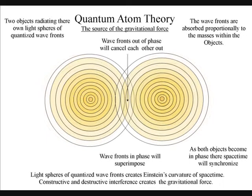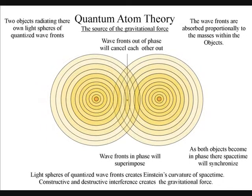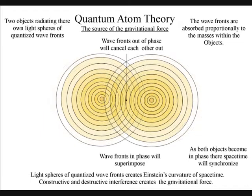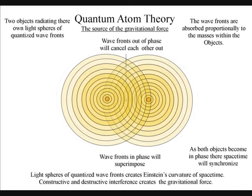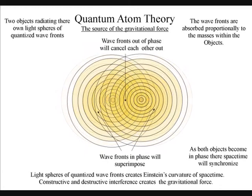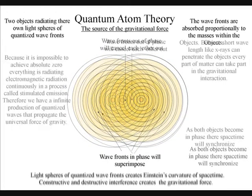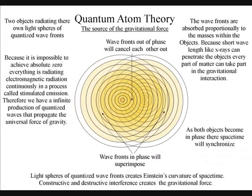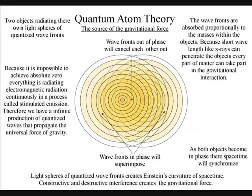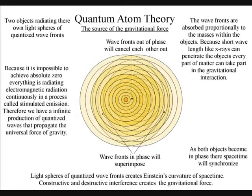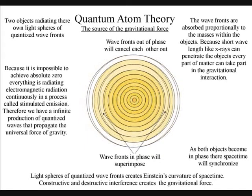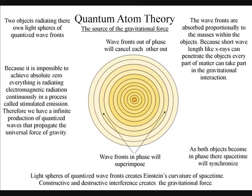When the wavefronts of two spheres come in contact, we will have destructive interference and the wavefronts out of phase will cancel each other out. There will also be constructive interference between the wavefronts that are in phase, and they will superimpose. The radiating energy will be entirely absorbed proportionally to the masses within the objects.